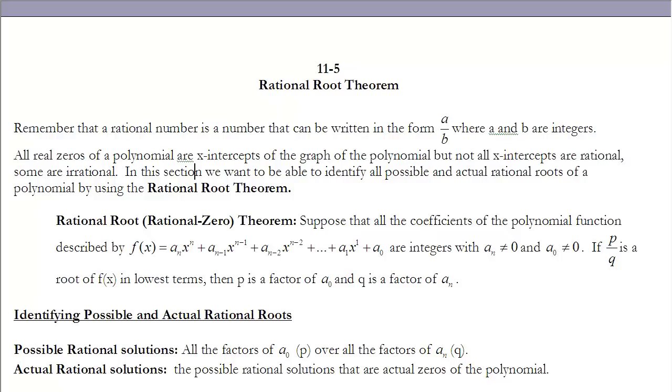If you think back to the last section, we found that the zeros, or the roots of a polynomial, were the x-intercepts if I look at it graphically. So any polynomial, if I know the zeros of it, I know where the x-intercepts are. Well, those x-intercepts sometimes will be rational numbers, and sometimes they're irrational numbers.